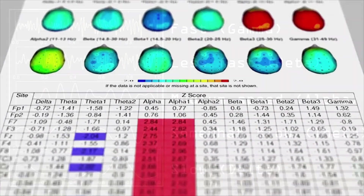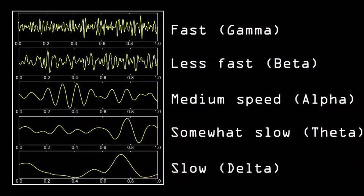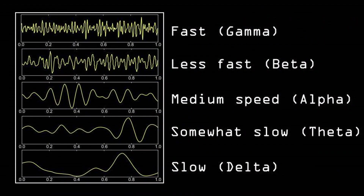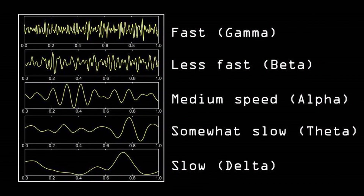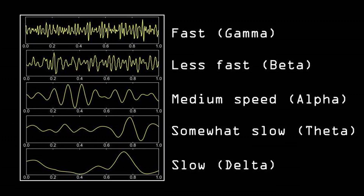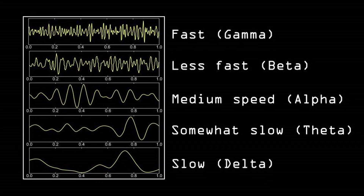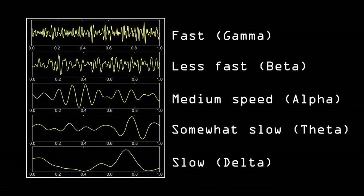For example, so-called alpha oscillations have been related to visual attention, so-called beta waves are related to inhibition and cognitive performance, and delta waves are observed during sleep.